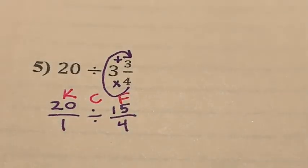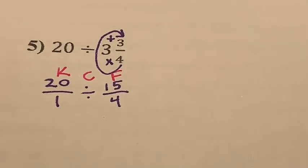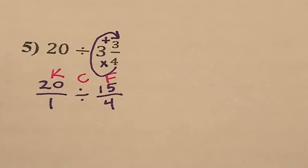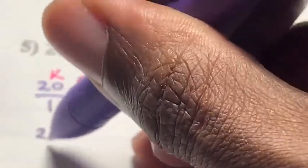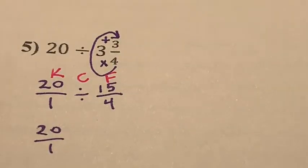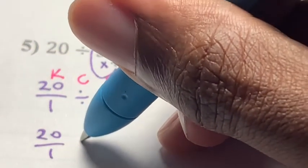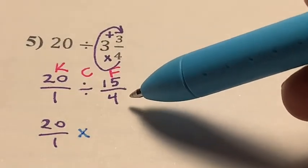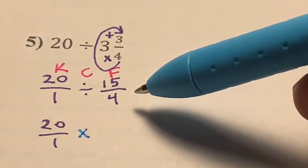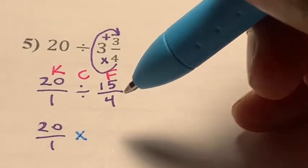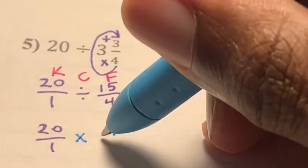KCF: we keep the first fraction the same — it stays 20 over 1. We change the division sign into its inverse, into its opposite — it becomes a multiplication symbol. And we flip 15 over 4 into its reciprocal, which becomes 4 over 15.